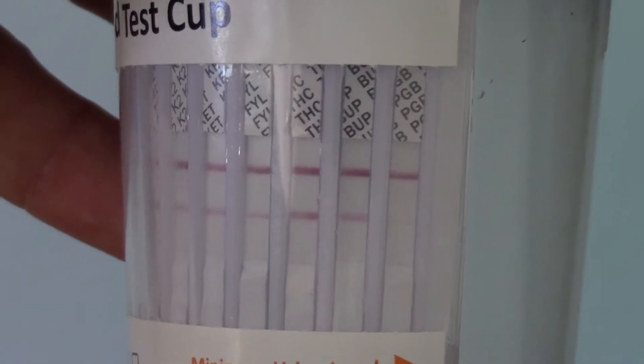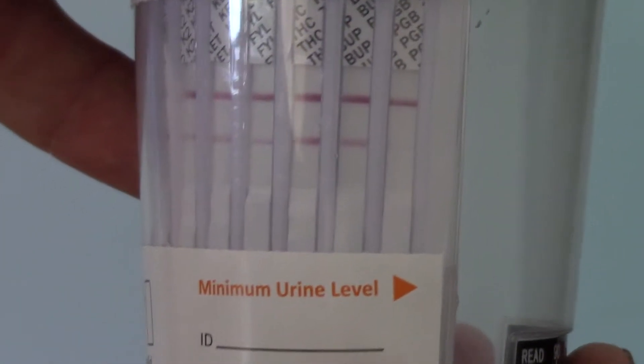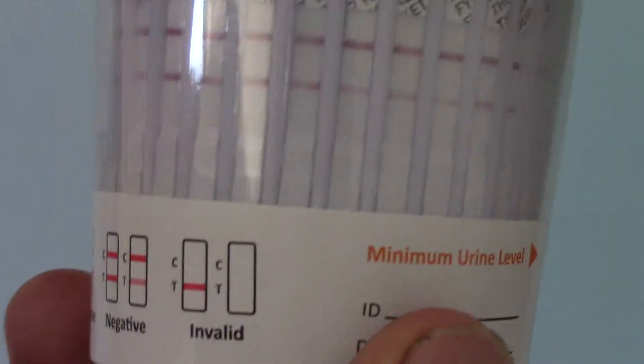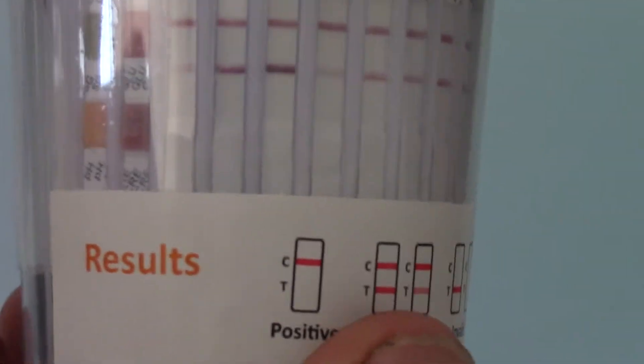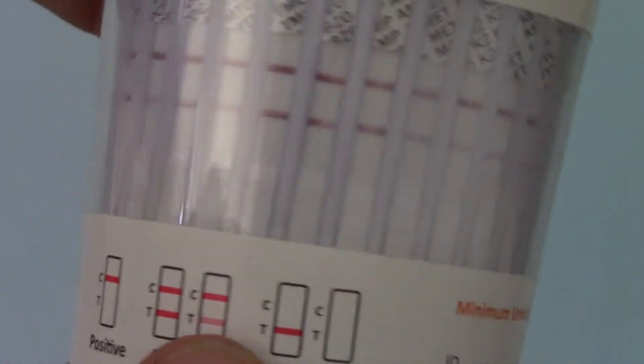So although that line is extremely faint for pre-gabalin, this is a negative test result. And the sample here is clear for all 16 drug groups tested.